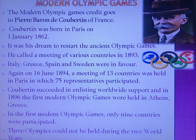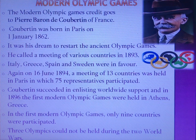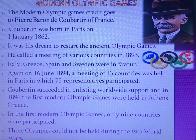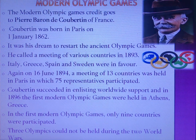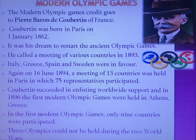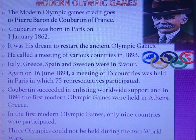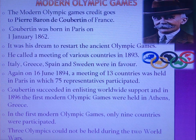It was Coubertin's dream to restart the Ancient Olympic Games. He called a meeting of various countries in 1893 — Italy, Greece, Spain, and Sweden were in his favor, but other countries opposed it. He tried again and again, and on 16th June 1894 a meeting of 13 countries was held in Paris with 75 representatives participating. Finally, with worldwide support, he succeeded.